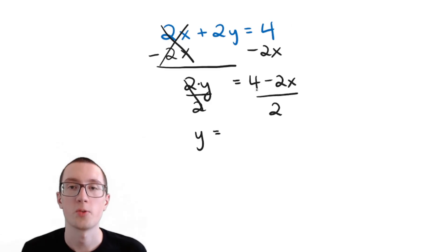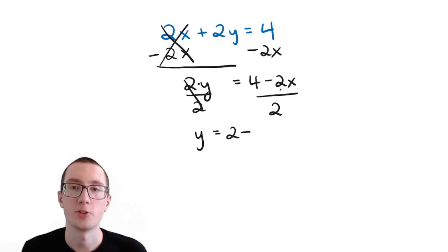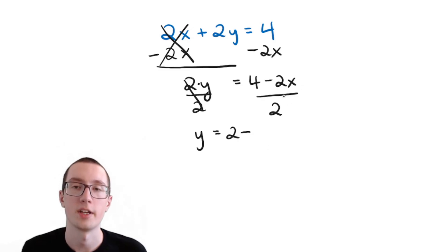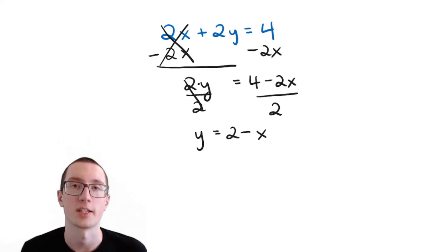So we'll start with 4 divided by 2, which is 2. And then negative 2x divided by 2 — the negative sign is going to stay, and 2 divided by 2 is 1. We do have an x here, so the x has to carry over. But we don't have to put 1x — if you have 1x, that's just x. If you don't have the number there, you assume it's 1. So we'll leave it like that.